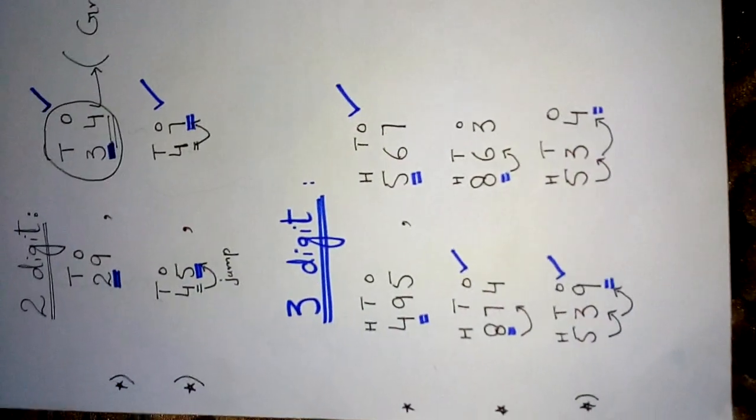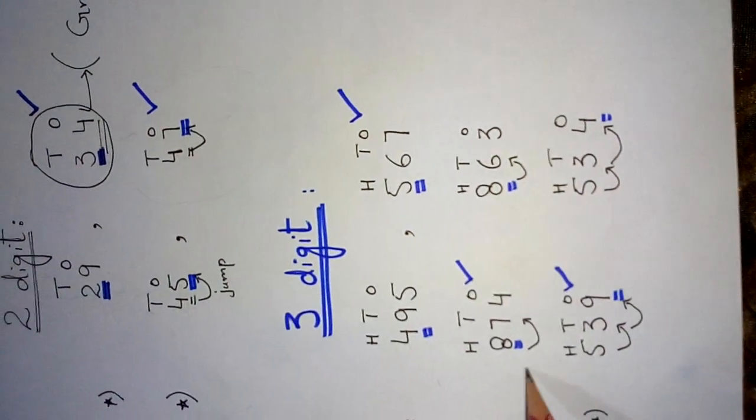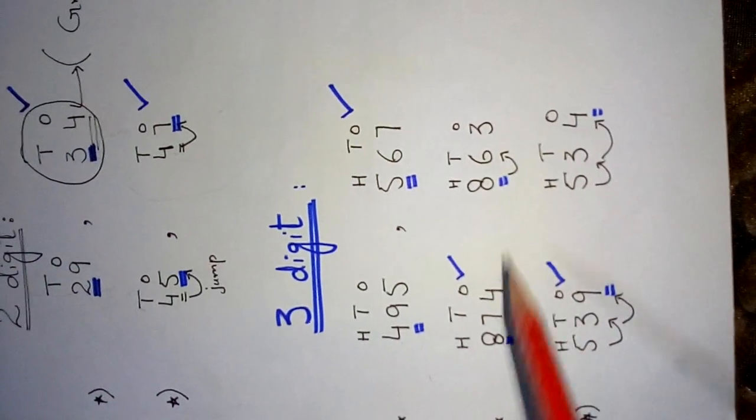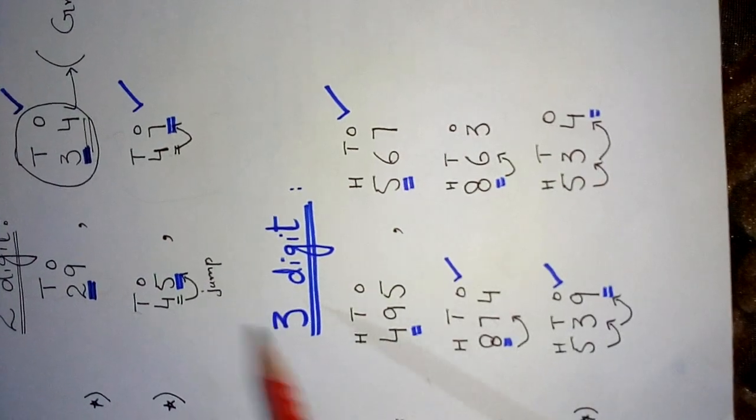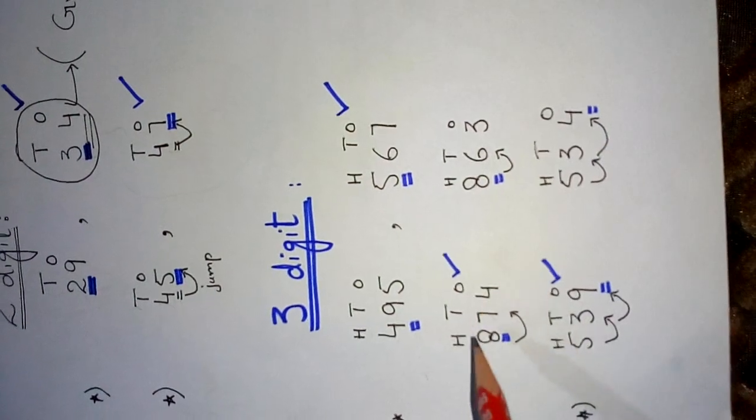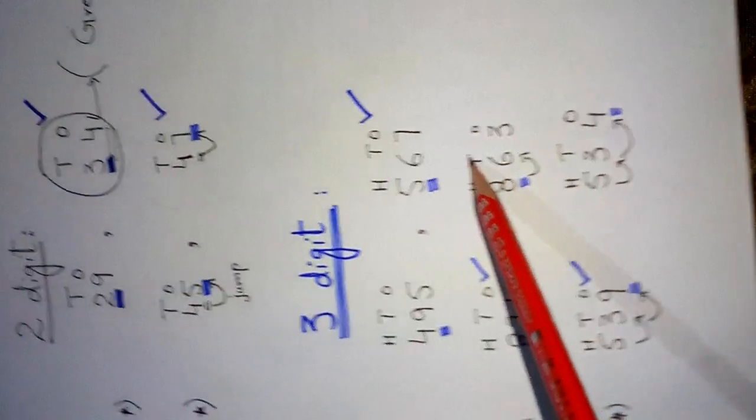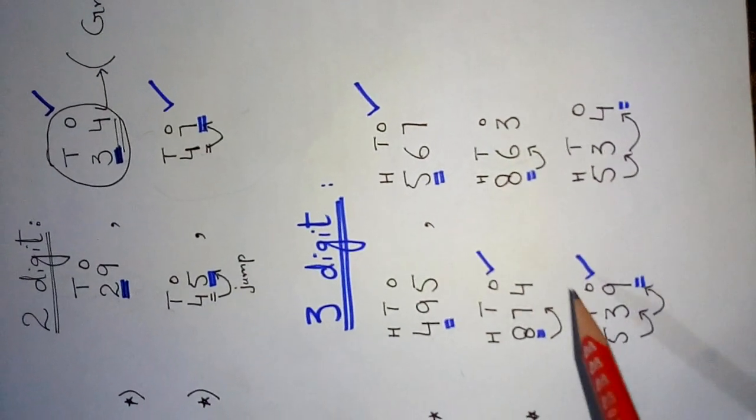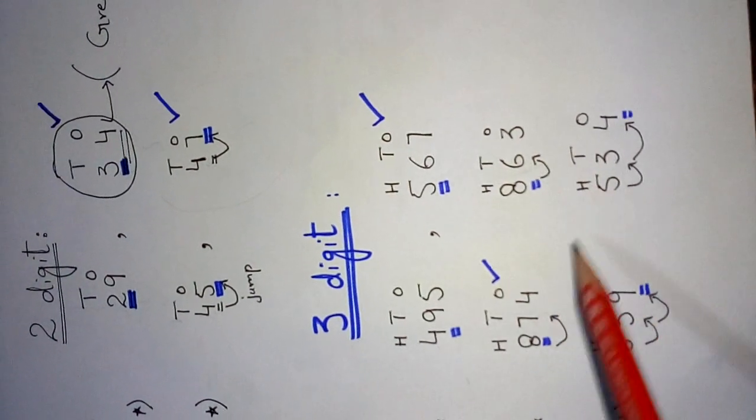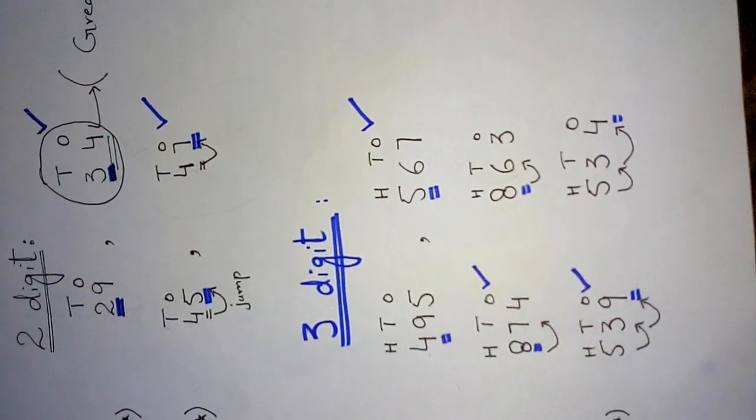Question number two: 874 and 863. From the left side, comparison starts. Here is 8 and 8. Both the digits are same. We already discussed when the digits are same, we will jump to the next place value, which is the tens place value. Here is 7 and here is 6. Now compare the 6 and 7 digits. In counting, 7 is greater than 6. It means 874 is the greater number. So take the greater number.